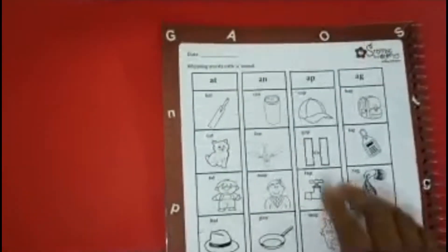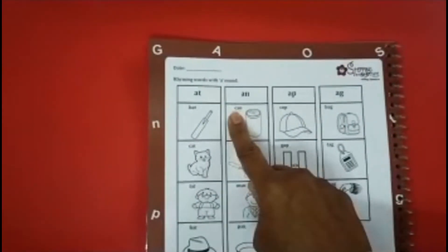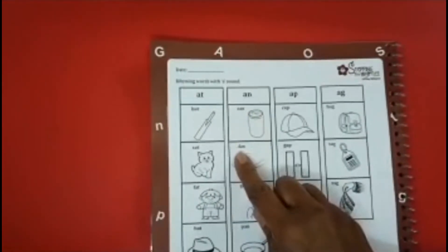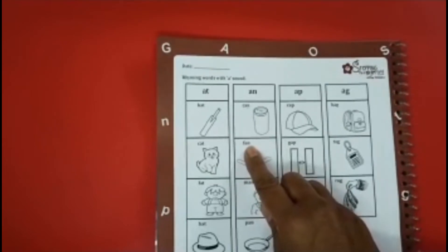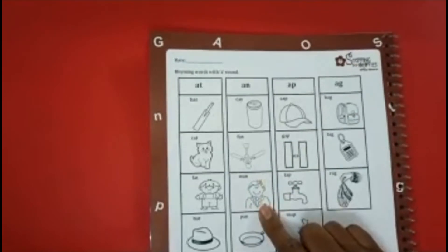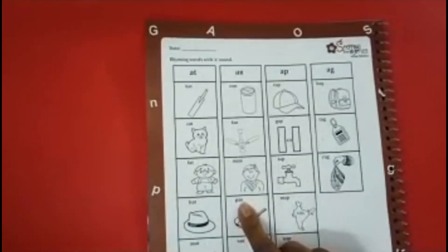These are, N sound words. K, A, N, can. F, A, N, fan. M, A, N, man. P, A, N, pen.